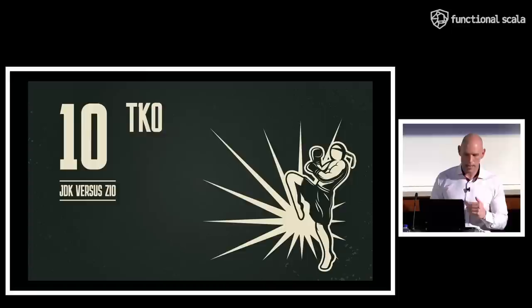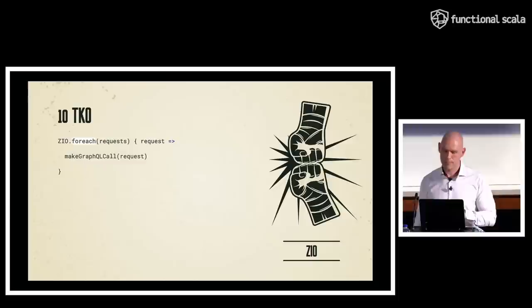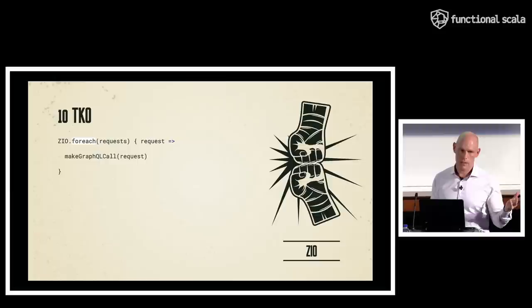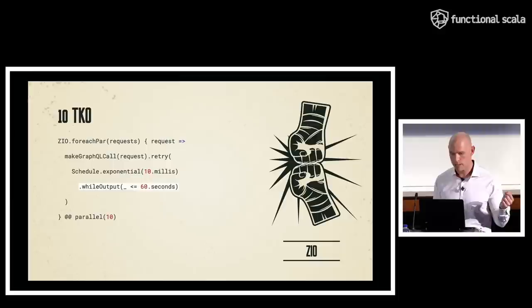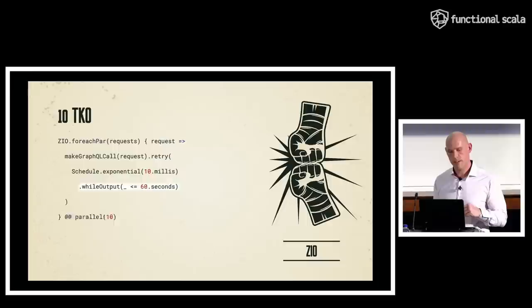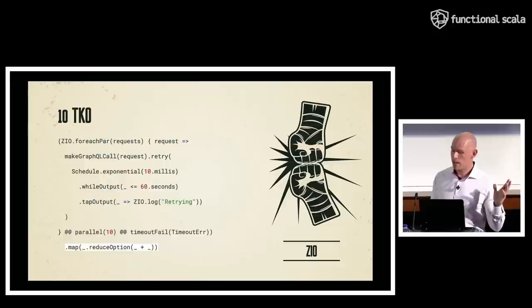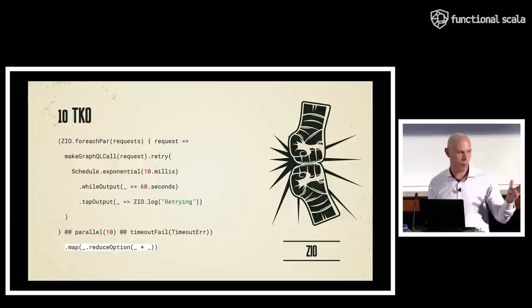Finally, round 10: I'll rapidly walk through code I would challenge any Loom or JDK fan to write using JDK. Start with a forEach loop over requests making a GraphQL call. Do it in parallel, limited to a parallelism factor of 10. Retry each GraphQL call using exponential backoff starting at 10 milliseconds, continuing until spacing between recurrences exceeds 60 seconds. Timeout the entire process using a timeout error. Then map over the results, collecting all GraphQL calls and aggregating them into a single response. I did that in one slide with ZIO.